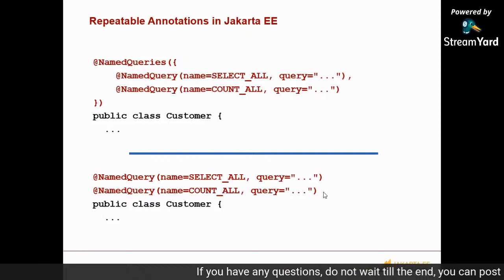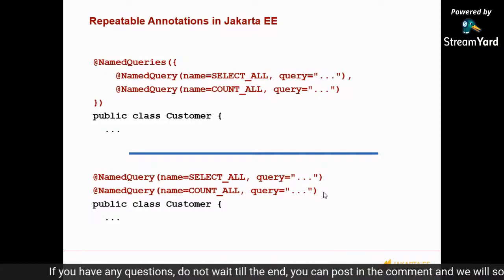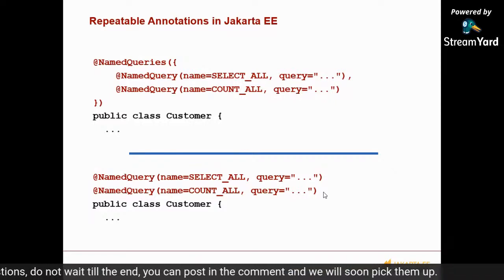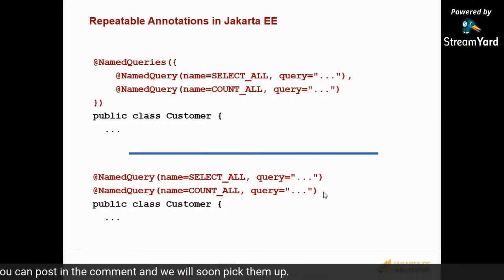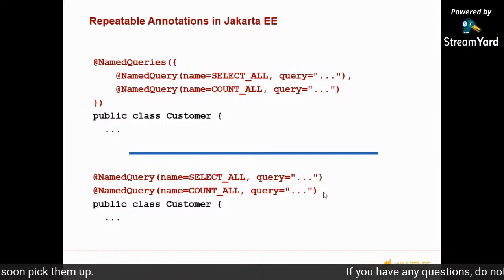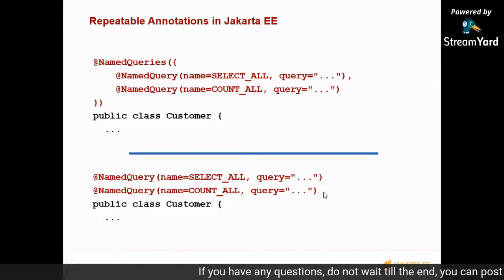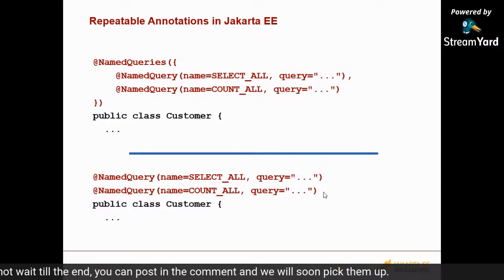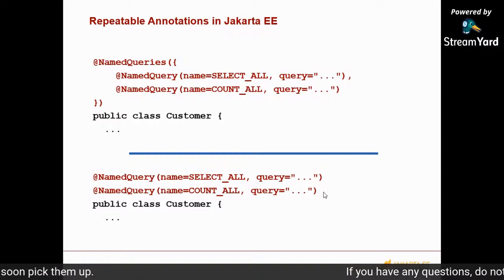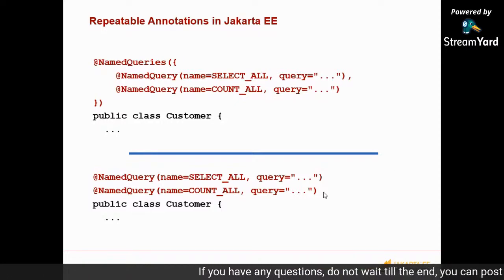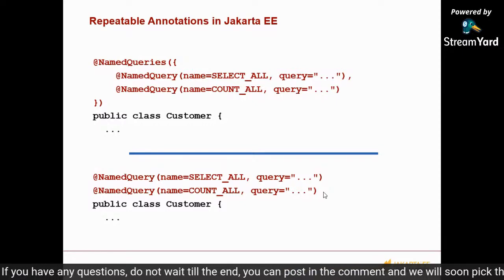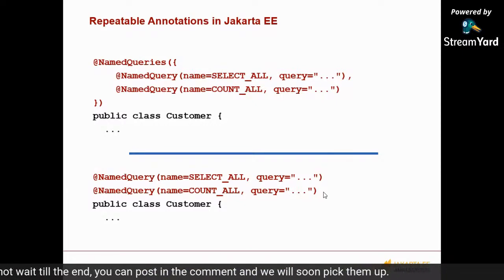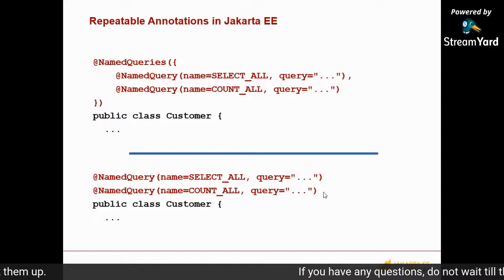Repeatable annotations is a straightforward example. Prior to Java SE8, you could not repeat annotations — you could only have one annotation at a given point like a class declaration. As a result, Java EE had wrapper annotations like @NamedQueries as a workaround. In Java EE8 and Jakarta EE8, you no longer need that — you can just repeat annotations directly. This applies across the standard: JPA, JSF, EJB, and a number of other places where repeatable annotations are in play.